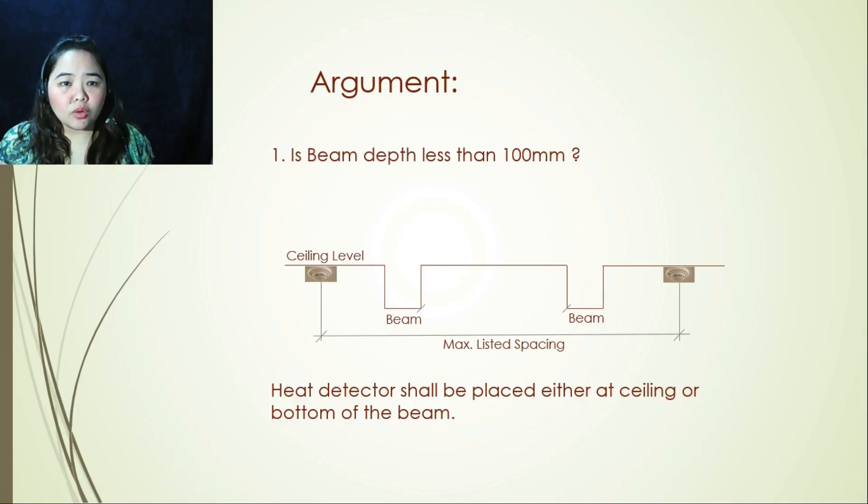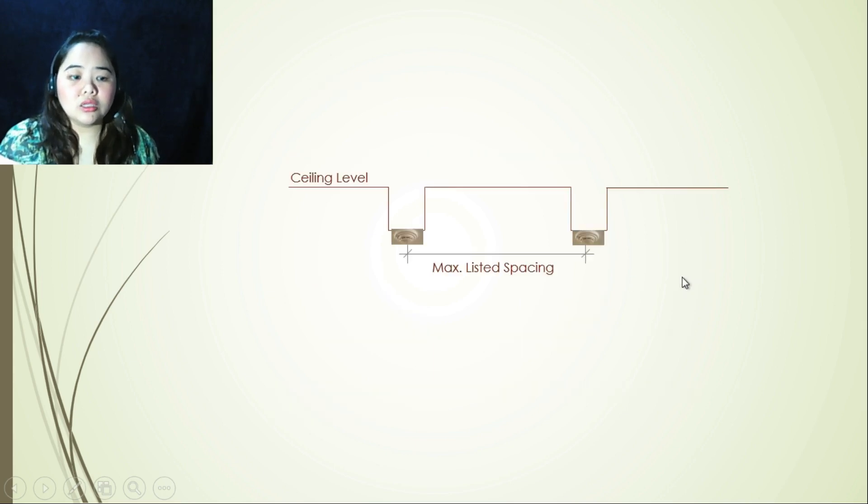So now that we know the rules, we proceed with the arguments. Argument number one is beam depth less than 100 millimeters. If so, that will be considered a smooth ceiling, so you will then follow the maximum listed spacing. So again, if you were to follow NFPA standards, that's 15 meters, but you can also refer to your manufacturer. Heat detector shall be placed either at ceiling or bottom of the beam. So here is our ceiling, you can place it either here or onto the bottom of the beam, still following maximum listed spacing.